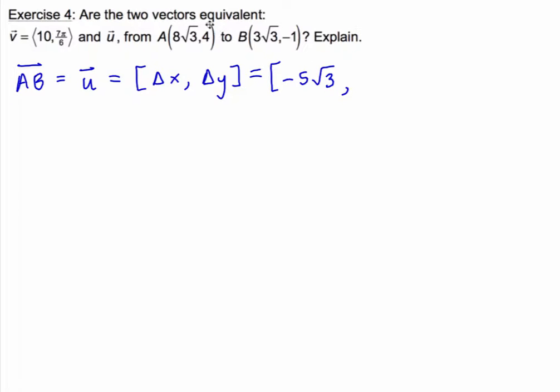And the delta y is going to be negative 1 minus 4 which is negative 5. And then we have vector v which is given in polar form and one of the easiest ways to compare is if the two vectors are in the same form so I'm going to convert polar form into rectangular form. First of all I know that my blue vector has both x and y components negative and the red vector is going to be the red vector. The red vector with an angle in quadrant 3 will also have negative x and y components.